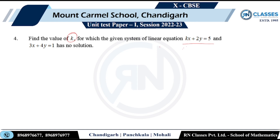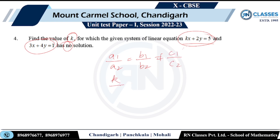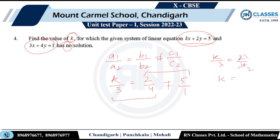The no-solution condition is a1/a2 equal to b1/b2, not equal to c1/c2. So k/3 should equal 2/4 and should not equal 5/1. The second condition is clearly satisfied. Equating the first two: k/3 equals 2/4 which is 1/2, so k equals 3/2, which is the answer.